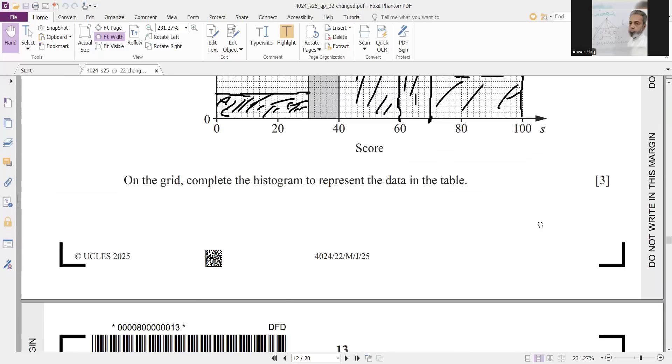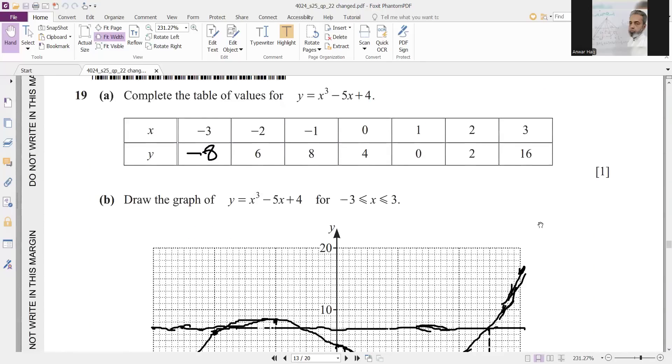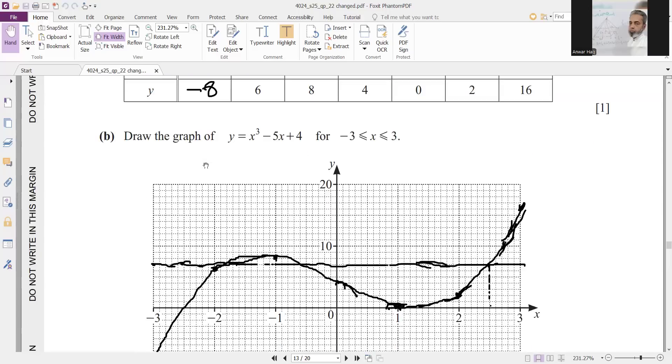Now question 19, complete the table. When you will put here x equals minus 3, so you will get minus 27 plus 15, that will be minus 12. Minus 12 plus 4 will be minus 8, so y equals minus 8. Now plot the points and you will get just like this curve.